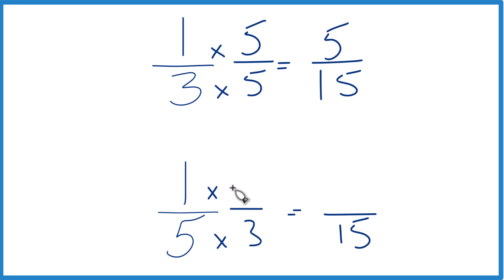Down here, we'll multiply by three. One times three, that gives us three. And now we can compare. Five is larger than three, so 5/15 is larger than 3/15. Since these are equivalent fractions here, 1/3 is larger than 1/5.